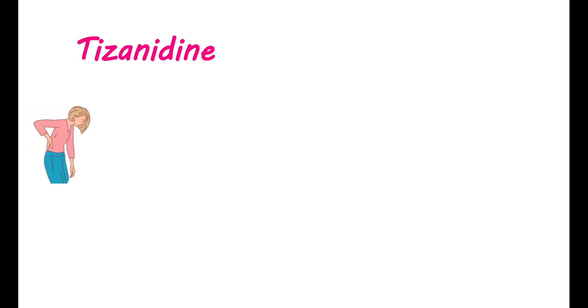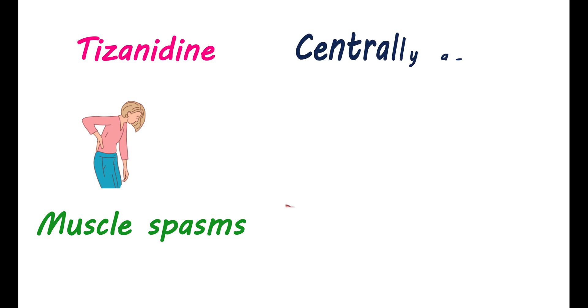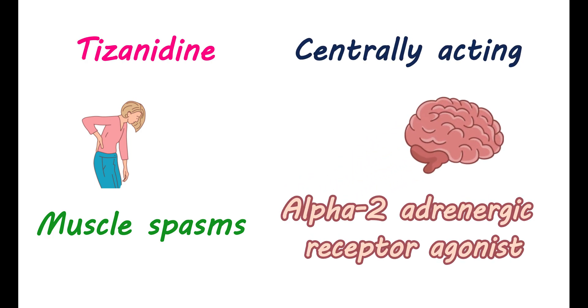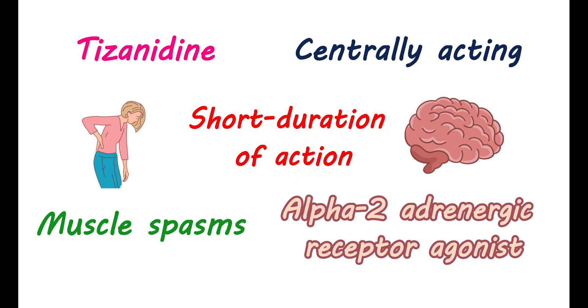Tizanidine can be used to relieve muscle spasms and other conditions associated with increased muscle tone. It is one of the centrally acting medications, which is an alpha-2 adrenergic receptor agonist. It has a short duration of action, and therefore it is recommended for people who need relief from spasticity.